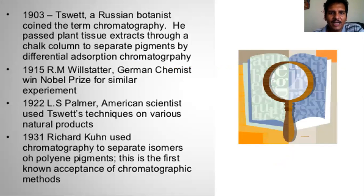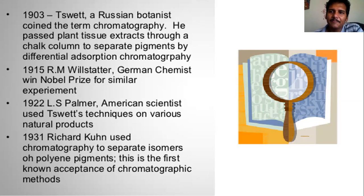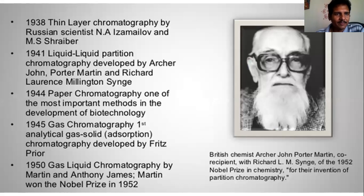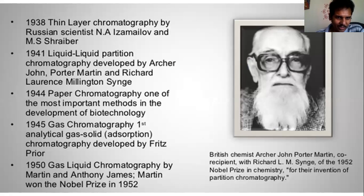Following Tessward, many people explored the field of chromatography. In 1915, RM Will Slater, a German scientist, won a Nobel Prize for a similar experiment. In 1922, L.S. Palmer used Tessward's techniques on natural products. In 1931, Richard Kuhn used chromatography to separate isomers. In 1938, thin layer chromatography emerged; in 1941, liquid-liquid partition chromatography; in 1944, paper chromatography. The first GC was developed by Fritz Pryor in 1945.